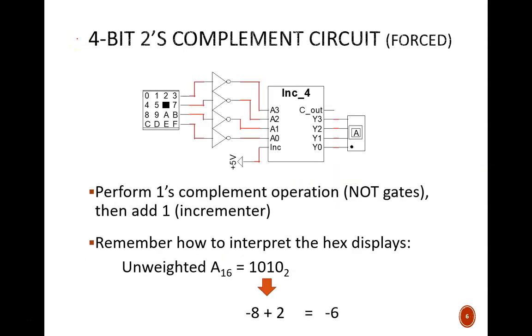Now for the two's complement operation. Recall that this is defined as the one's complement result, plus one. So that is exactly what the circuit does. This set of NOT gates does the one's complement operation. This incrementer adds one to the result.